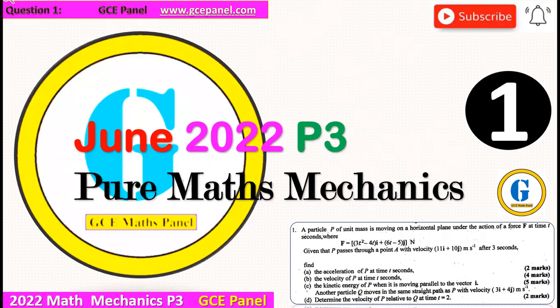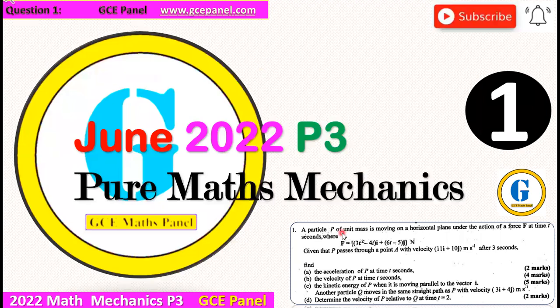Our first question reads: a particle of mass, of unit mass, is moving on a horizontal plane under the action of a force F at time T seconds. Given that P passes through the point A with velocity 11i plus 10j meters per second after 3 seconds, find the acceleration of P at time T seconds.